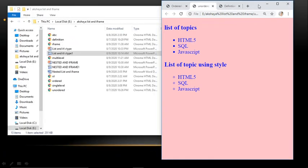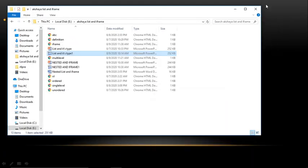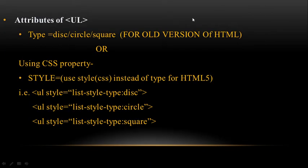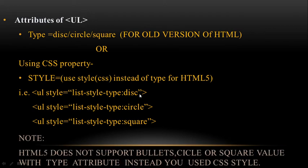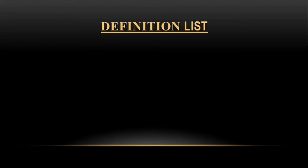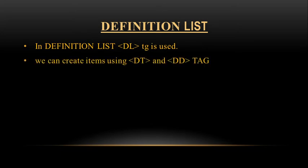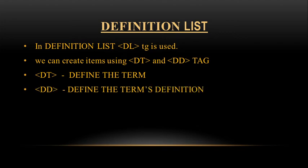Now for the third type of list: the definition list. In a definition list we use the DL tag. We create items using DT and DD tags. For ordered and unordered lists we used the LI tag, but in definition lists we use DT and DD tags. DT means 'defines the term' and DD means 'defines the term's definition'. As the name suggests, the definition list tag is used to create definitions on the web page.